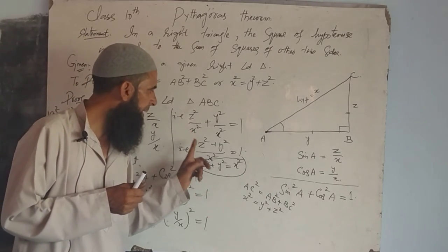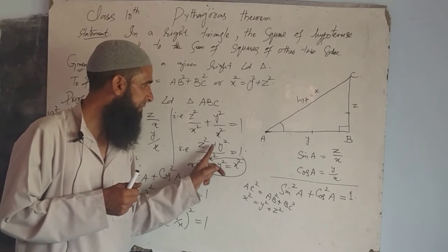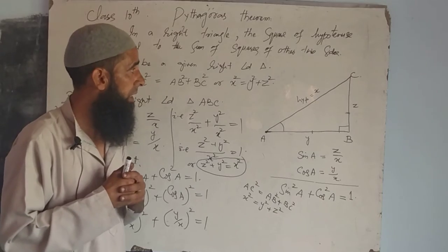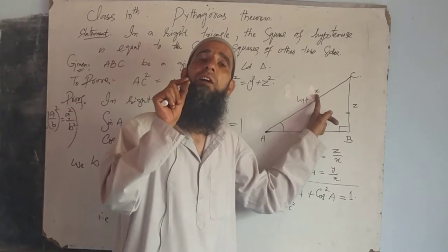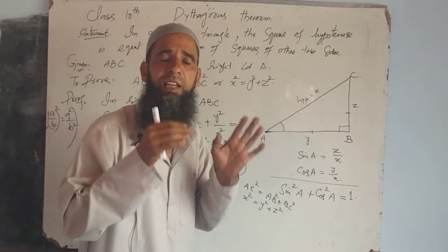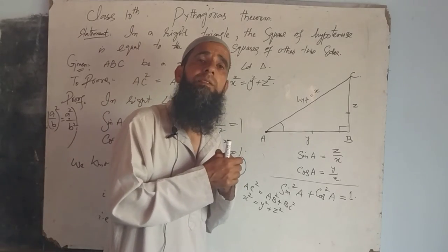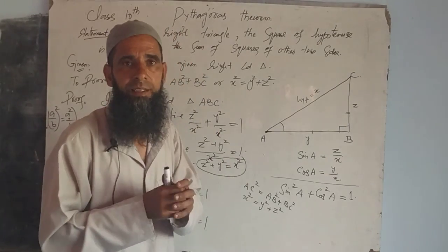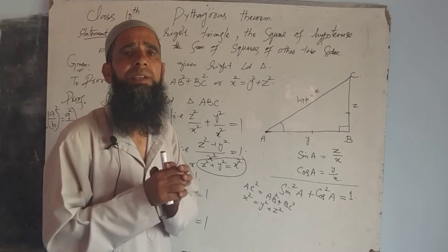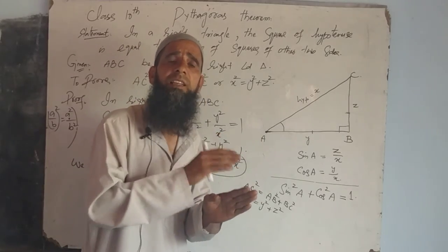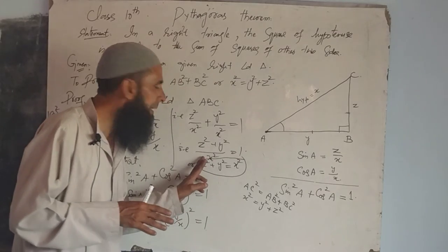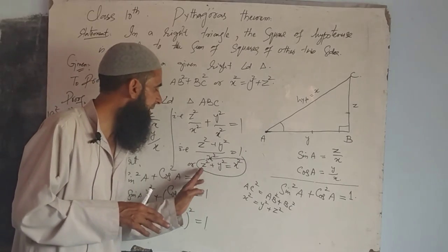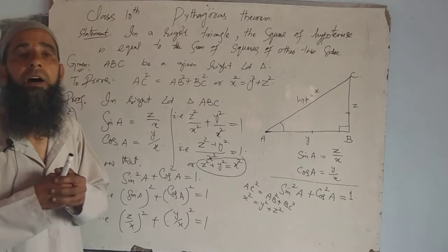Dear students, there may be a problem in your mind: what if X squared equals zero? This is not possible because X is one of the sides of a triangle. The length of a side of a given right triangle cannot be equal to zero. So Z squared plus Y squared equals X squared is verified.